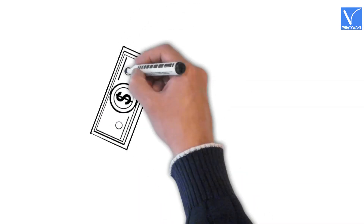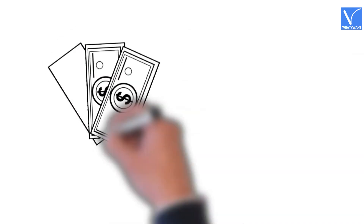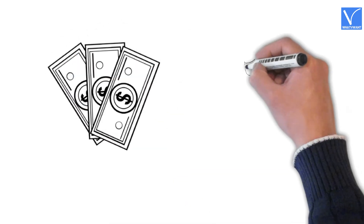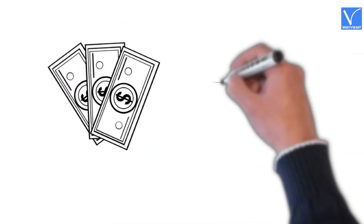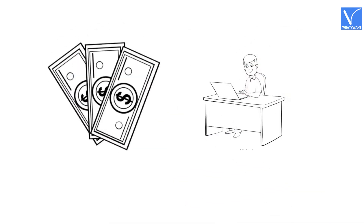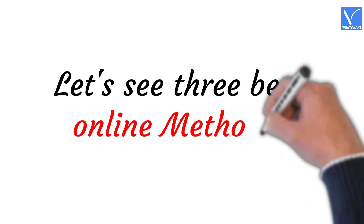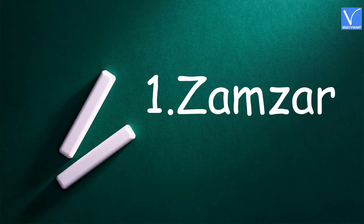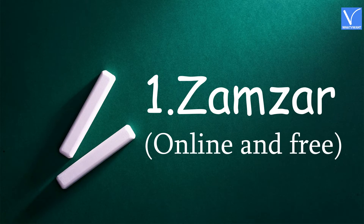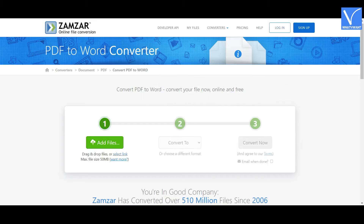If you don't want to spend much money on premium tools, then go with the free online software. Let's see the three best online methods. Method 1: Using Zamzar — it is the best online and free software. Go to the Zamzar PDF to Word Converter website.